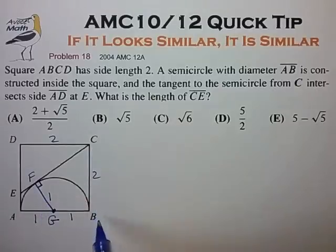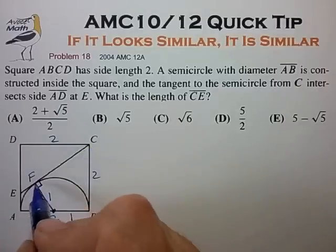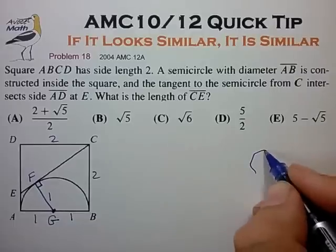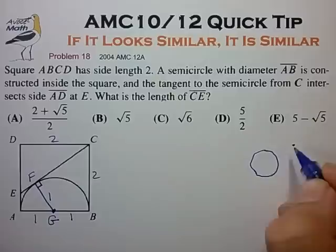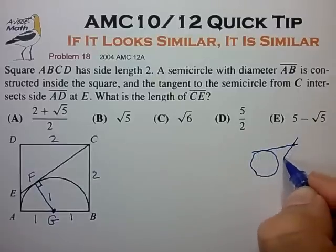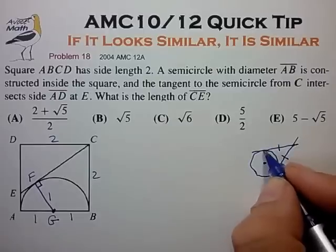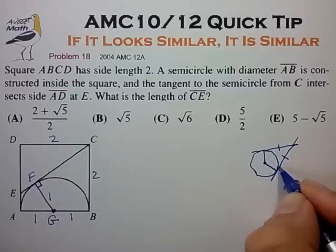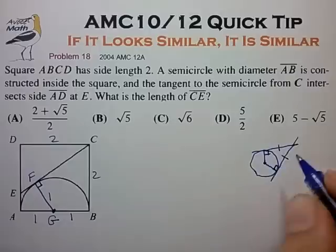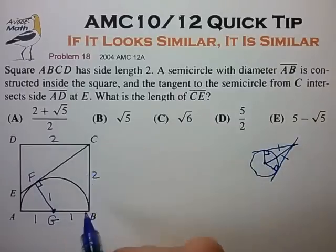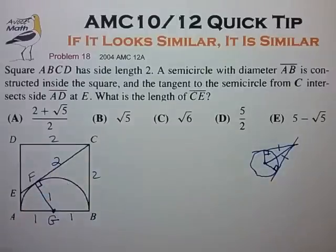We know that the length CB equals the length CF, because anytime we draw two tangent lines to the same circle, the two tangent lines have to be of the same length. You can see that pretty quickly because you can draw in the two congruent right triangles. So CB equals CF, let's draw in 2 here.